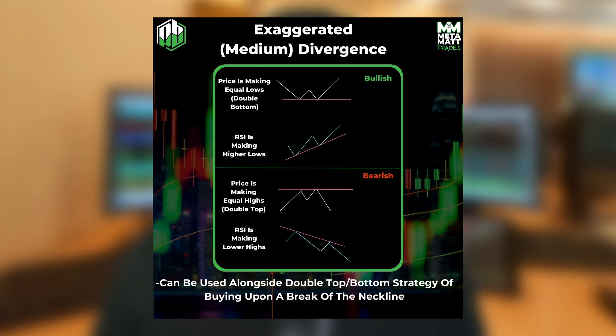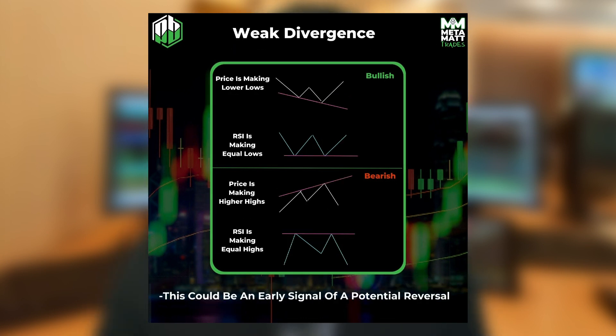We also have weak bullish divergence. This is when the price is making lower lows and the RSI is making equal lows. The bearish version is when the price is making higher highs and the RSI is making equal highs.